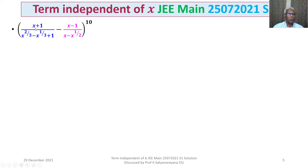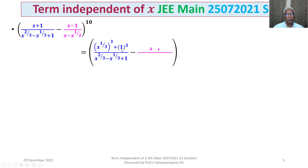We write x plus 1 as a cube plus b cube, that is (x^(1/3))³ plus 1³, over the denominator as it is. In the second part, we take the denominator as x^(1/2) into (x^(1/2) minus 1). After seeing this factor, we write x minus 1 as (x^(1/2) + 1)(x^(1/2) − 1).